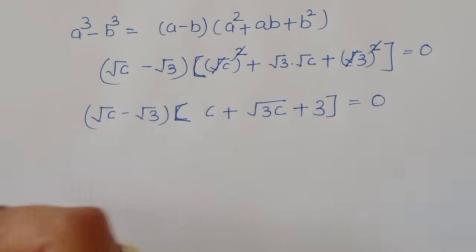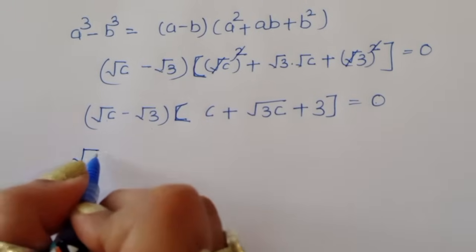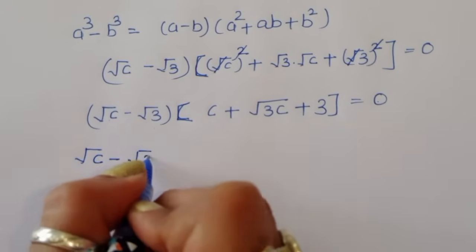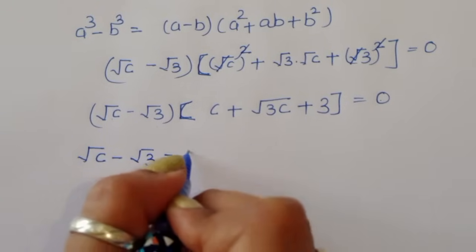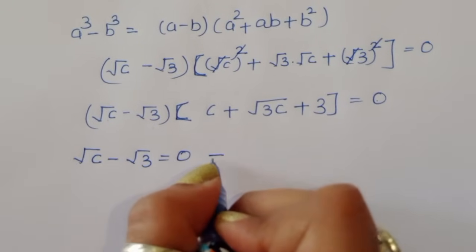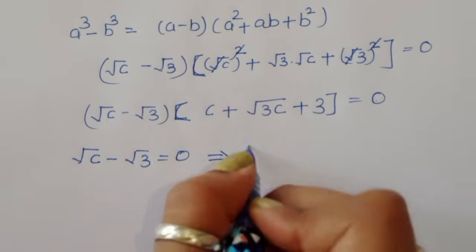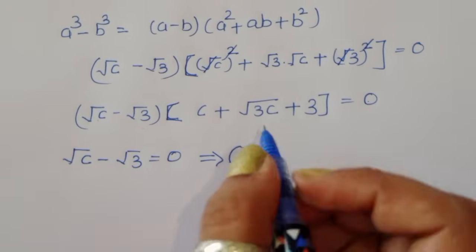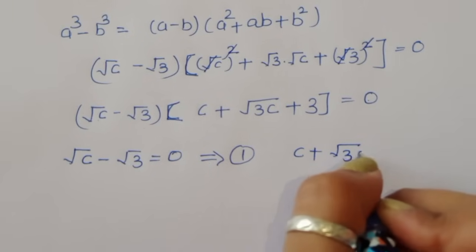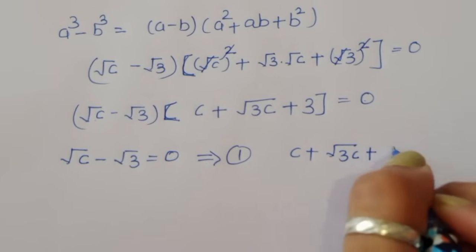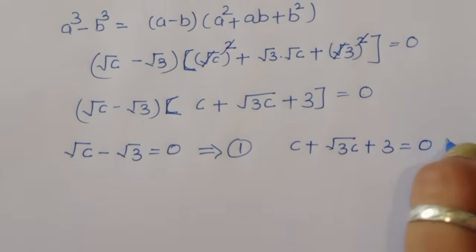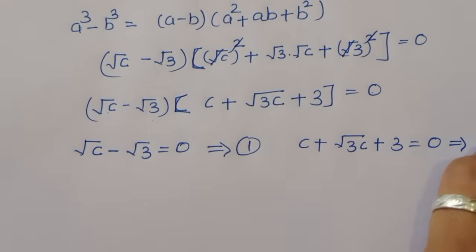We now have two equations: Equation 1 is √c minus √3 equals 0, and Equation 2 is c plus √(3c) plus 3 equals 0.